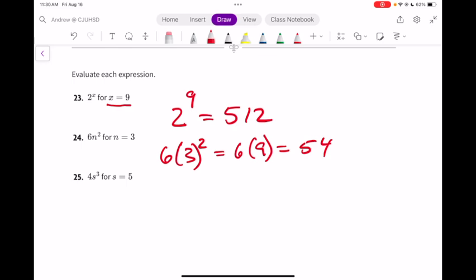And lastly, let's put 5 in for s. 4 times 5 to the 3rd power. 5 to the 3rd power is 5 times 5 times 5, that's 125. 4 times 125 is 500.